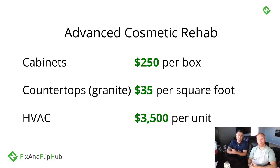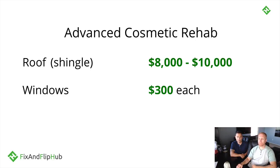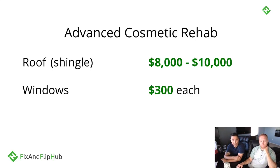Moving into advanced cosmetic rehab — on top of the basics, you're replacing cabinets at $250 per box, granite countertops at $35 per square foot, and HVAC at $3,500 per unit. For roofing, you can expect $8,000 to $10,000 for shingle. When replacing windows, count on about $300 each.